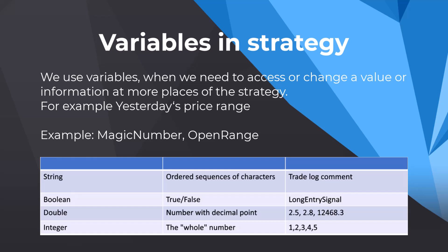In strategies, we use variables every time when we need to access or change a value or information at more places of the strategy — for example, yesterday's price range, magic number, or open range. Here we have types of variables. The first one is string: it's an ordered sequence of characters; for us it may be, for example, a comment from the trade log.